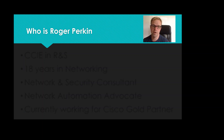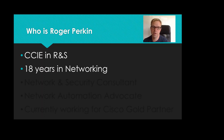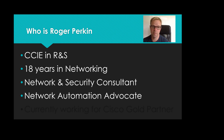So who am I? My name is Roger Perkin. I'm a CCIE in routing and switching. I've got 18 years experience in networking. I'm a network and security consultant, a network automation advocate, and I currently work for a Cisco Gold Partner in the UK.